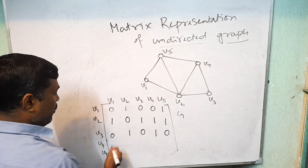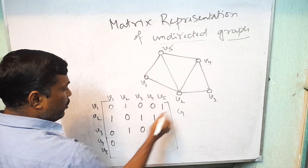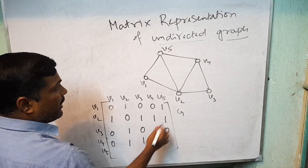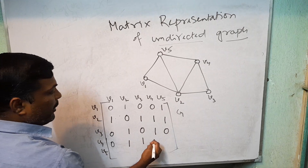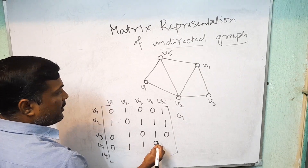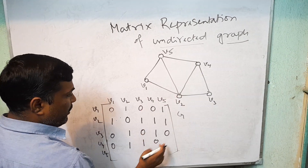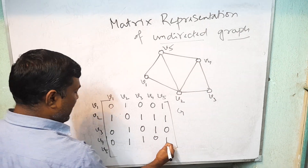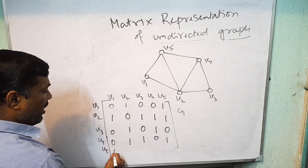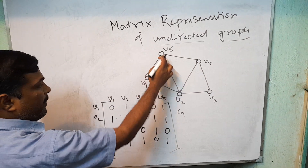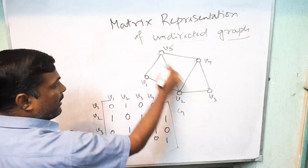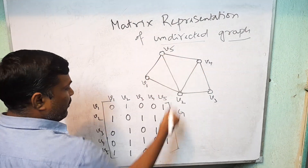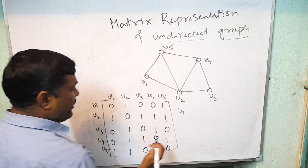V4 to V1: no edge, 0. V4 to V2: 1. V4 to V3: 1. V4 to V4: no edge, 0. V5 to V1: 1. V5 to V2: 1. V5 to V3: no edge, 0. V5 to V4: 1. V5 to V5: no edge, 0.